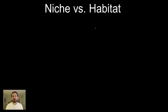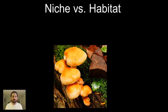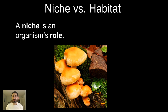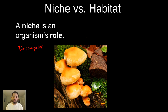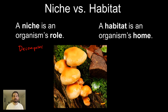Let's distinguish between two important words that are often confused: niche and habitat. Let's take this fungus as an example — a mushroom that lives on a log. Its niche is its role. It's breaking down that log, getting nutrients from it, and returning nutrients back to the soil — so it's a decomposer. Its habitat, by contrast, is its place or its home. It lives in a forest, and more precisely, it won't stray from that log. Niche is role; habitat is home.